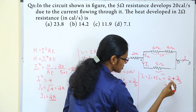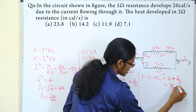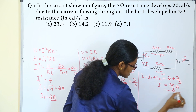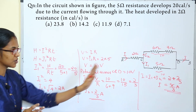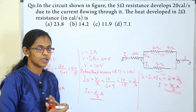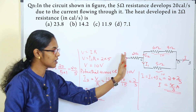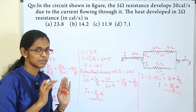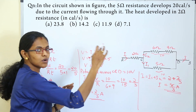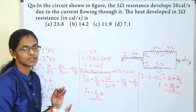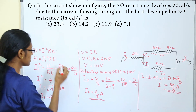The total current I equals I1 plus I2, which is 8 by 3 amperes. Now we apply this to the 2 ohm resistor. We need to use this current value in the heat equation for the 2 ohm resistance.